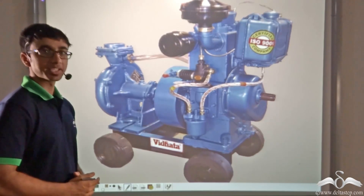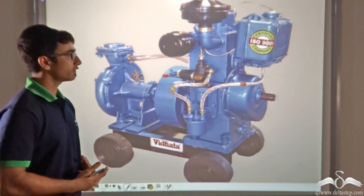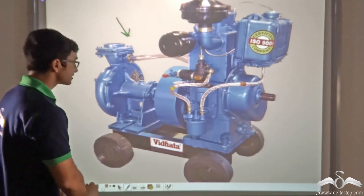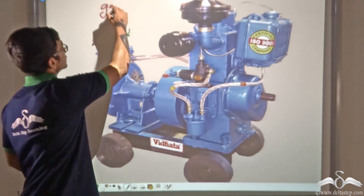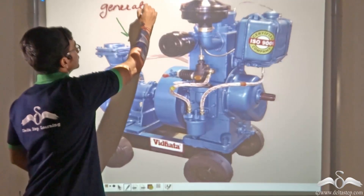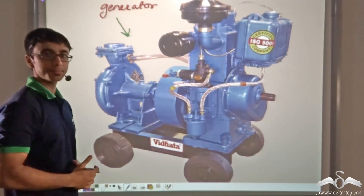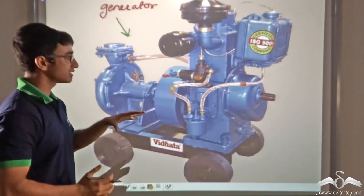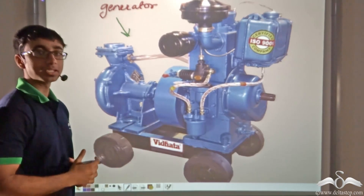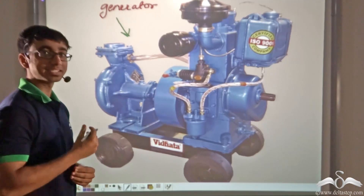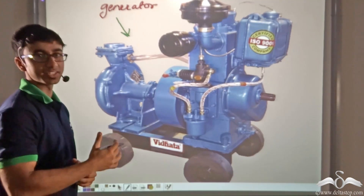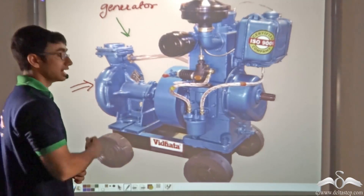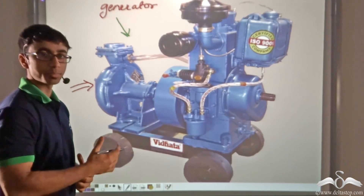If you take a look at the picture on the screen, you will find that a particular device has been shown. This device is known as a generator. The function of a generator is to provide electricity and current during the time of load shadings and power cuts. This device works on the principle that whenever there is a change in magnetic flux linked with the coil, a current is generated. Let us find out how this device works and how it helps us during times of load shadings and power cuts.